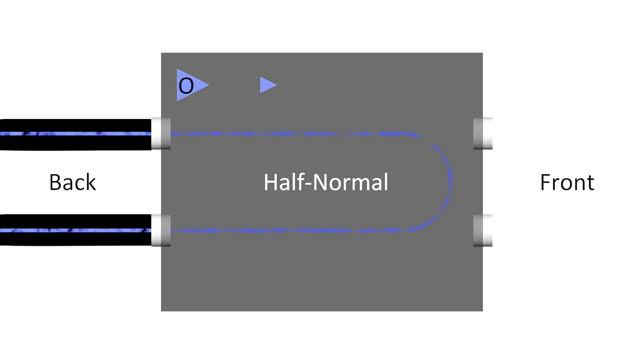This type of normaling differs from a full normal in that the signal switches off, breaking the normal when patching into the bottom jack only. This configuration also allows the engineer to create a second signal route while maintaining the half-normal signal route, in effect a Y cable.